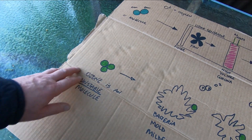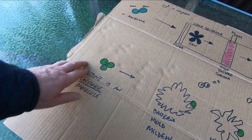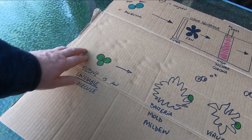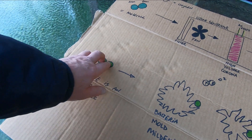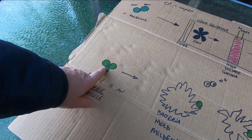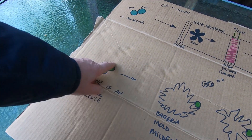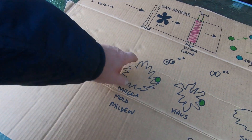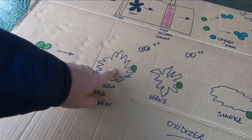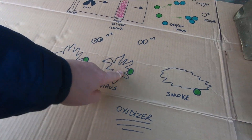The ozone molecule wants to go partying all the time. There's the oxygen in there, and then there's the extra one, and that one always wants to go partying. It wants to party with bad elements.